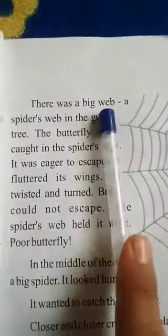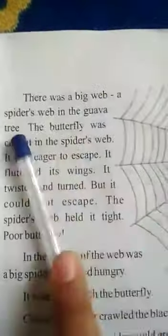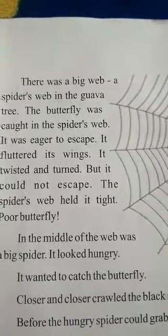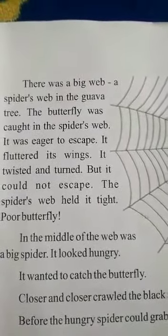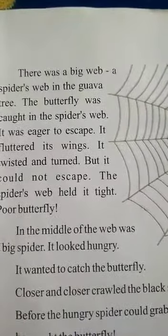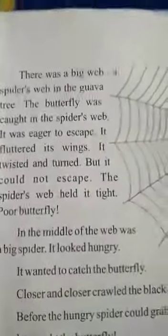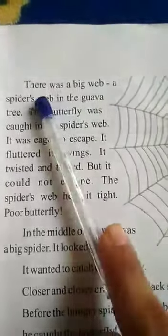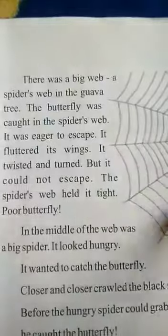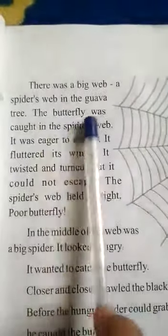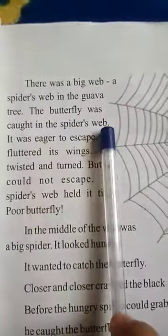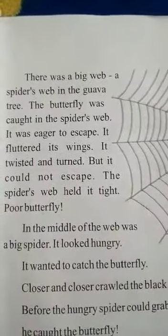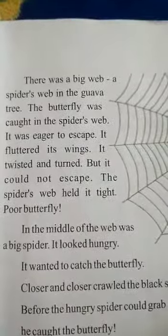There was a big web, a spider's web in a goa tree. और उसने butterfly कहाँ देखी? एक जगह पे goa tree था. Goa tree means अमरूद का tree, एक type का fruit है. और वो goa tree पे big web था — किसका? Spider का, मकड़ी का जाला था. The butterfly was caught in the spider's web. और वो butterfly spider के web पे जाके फँस गई थी. Spider means मकड़ी का जाला.